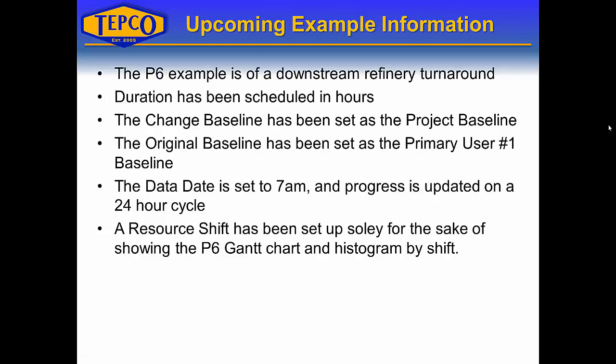I'm going to take you into P6 in a few minutes, but first let me describe the example I'll be building. The P6 example is a downstream refinery turnaround with durations scheduled in hours. The change baseline has been set as the project baseline, and the original baseline has been set as the primary user number one baseline. The data date is set to 7 a.m. and progress is updated on a 24-hour cycle. A resource shift calendar has been set up for displaying the P6 Gantt chart and histogram by shift.